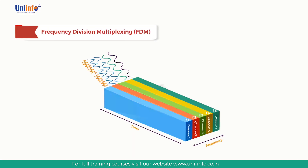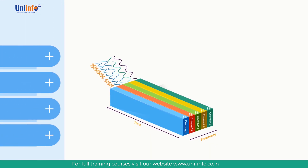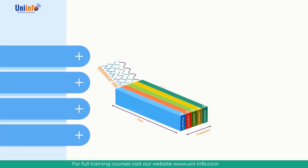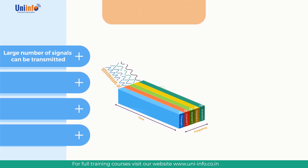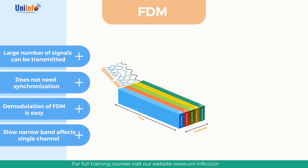Now let us discuss the advantages and disadvantages of FDM. Advantages: First, a large number of signals can be transmitted simultaneously. Second, FDM does not need synchronization between its transmitter and receiver for proper operation. Third, demodulation of FDM is easy. Fourth, due to slow narrowband fading, only a single channel gets affected.